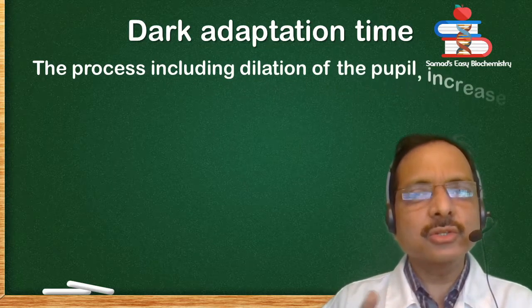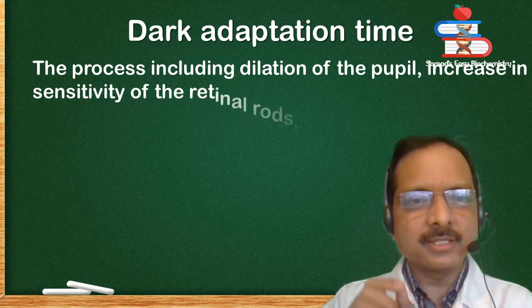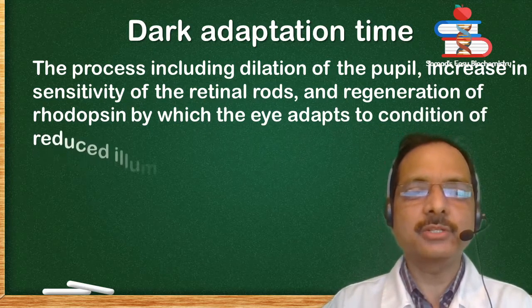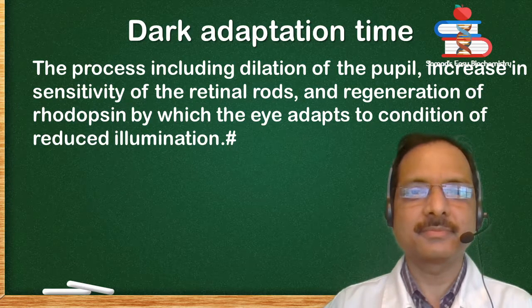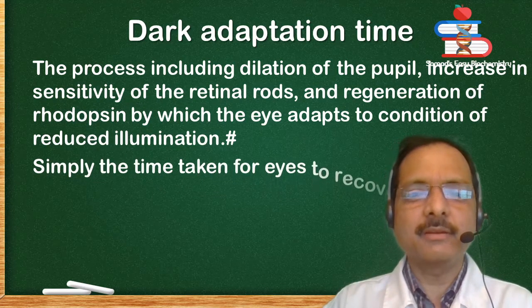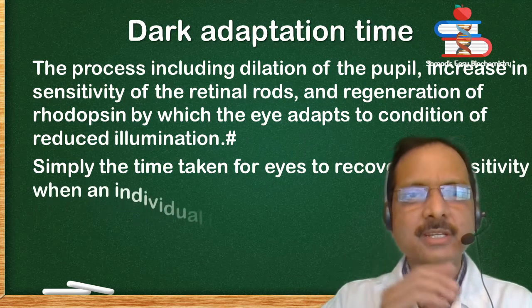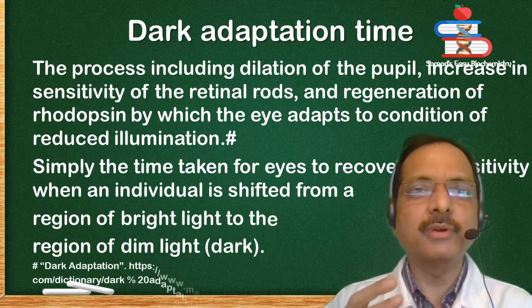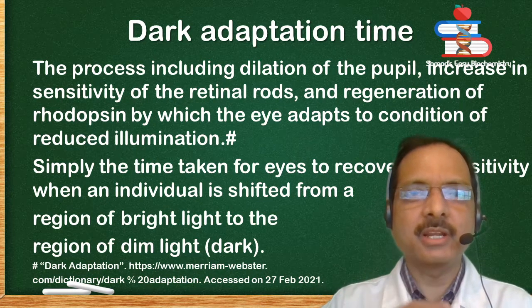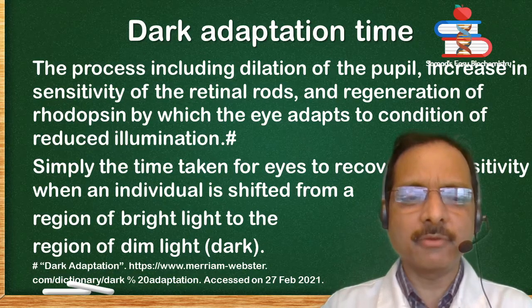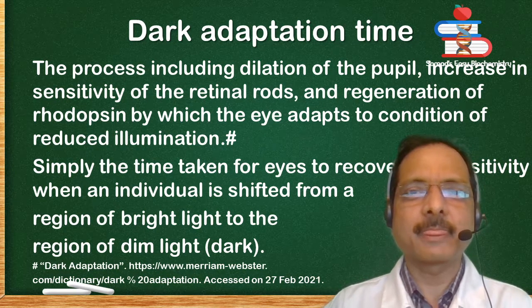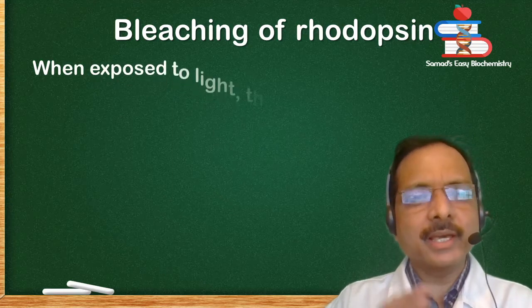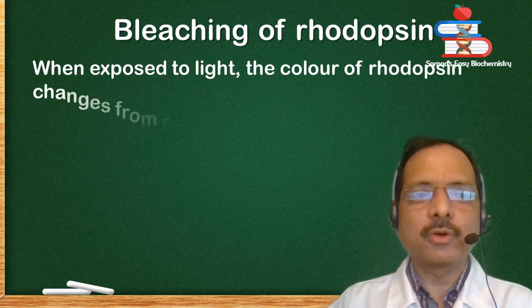Dark adaptation time. What is dark adaptation? It is the process including dilation of the pupil, increase in sensitivity of retinal rods, and regeneration of rhodopsin, by which the eye adapts to conditions of reduced illumination. In simple words, it is the time taken for the eyes to recover sensitivity when an individual is shifted from a region of bright light to a region of dim light.